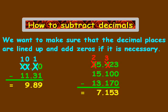Now 2 minus 1 is 1, and then 1 minus 1 is 0. So we have our answer here, which is 7.153, and that's our final answer there.